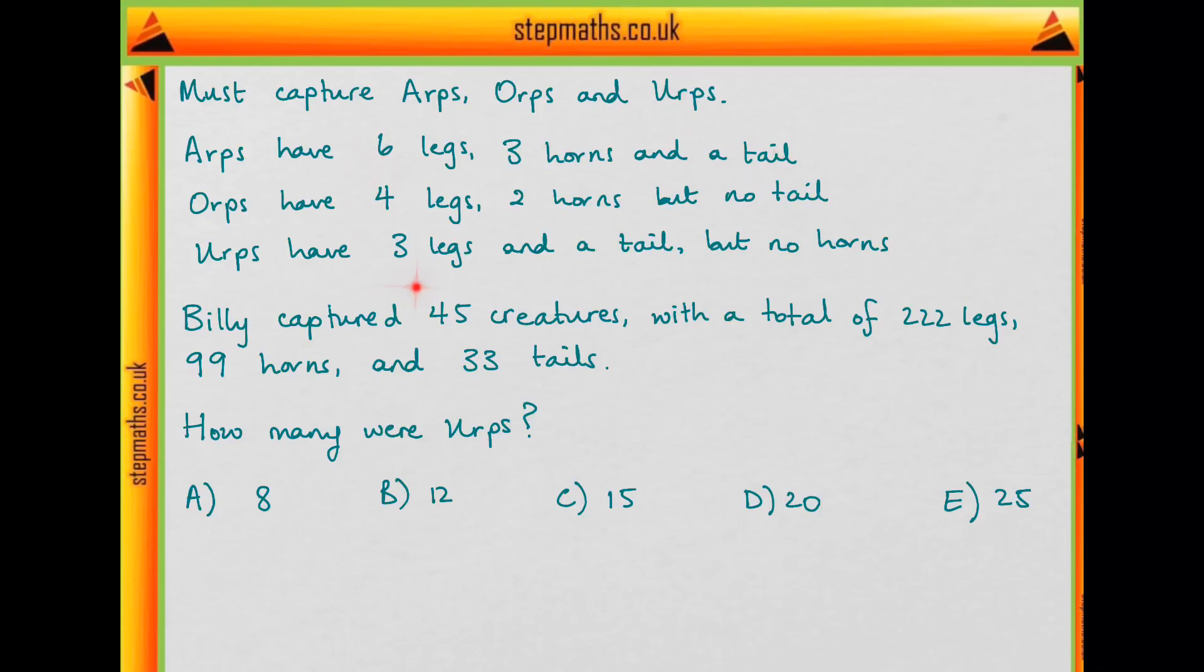We're told how many legs, horns and tails each of these have. And in his last game, Billy captured 45 creatures with a total of 222 legs, 99 horns and 33 tails. And we want to know how many of these 45 creatures were Earps.